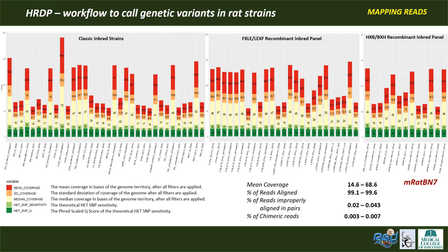Mean-based coverage values range from roughly 15 to 68x, and the estimated sensitivity to detect heterozygous sites as a function of coverage and base quality distribution drops quickly when mean coverage is below 20x, which is indicated by the red bar on the graph.